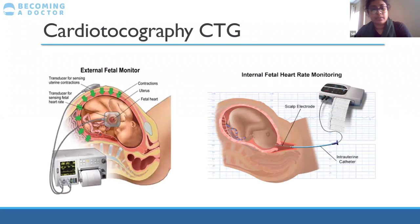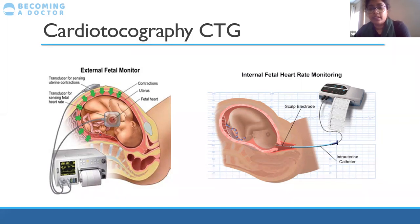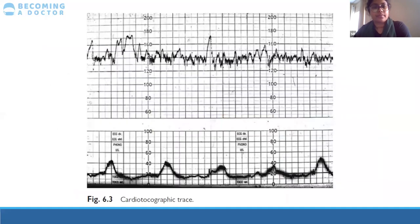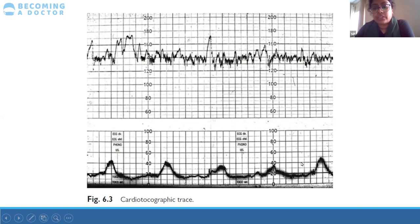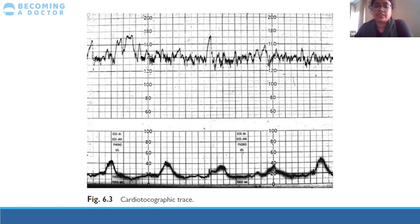When doing CTG transabdominally, you have two transducers: one monitors the fetal heart rate and the other monitors contractions. If doing it internally, you use a scalp electrode for the fetal heart rate but still have a transabdominal transducer for contractions. On the CTG, the top line is the fetal heart rate and the bottom line is uterine activity.